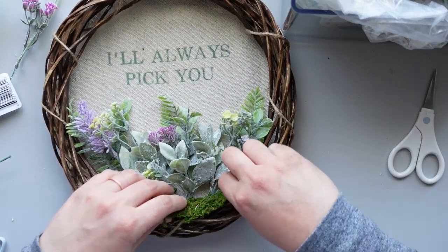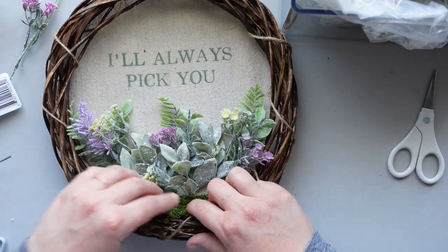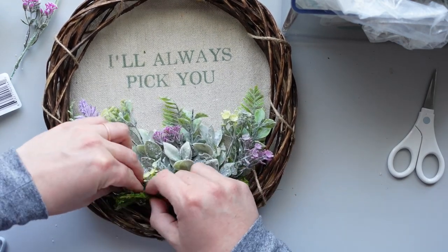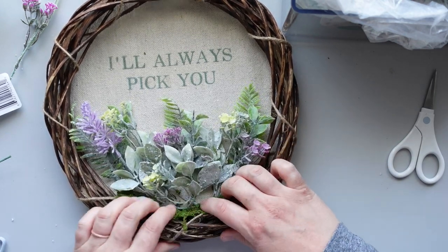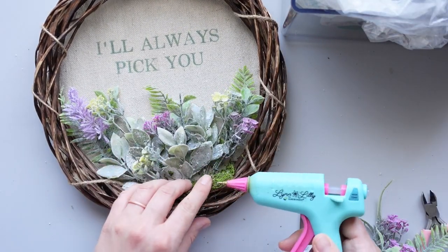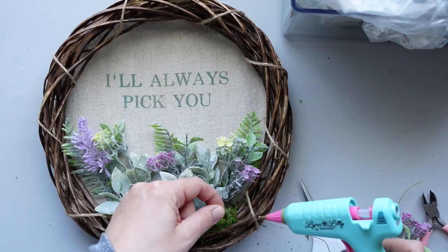I wanted to cover up the stems at the bottom of the wreath, so I added a thin sheet of moss from my stash. I secured the moss with hot glue, and this adorable wreath was complete.